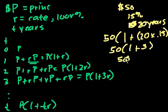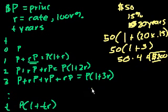So it's 50 times 4, which is equal to $200 to borrow it for 20 years. So $50 at 15 percent for 20 years results in a $200 payment at the end.